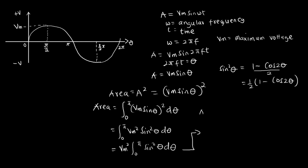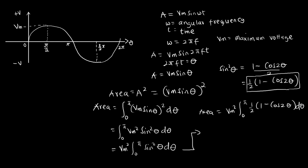Substituting the identity, I have the area equal to Vm² · ∫₀^π ½·(1 − cos2θ) dθ. The ½ is a constant so I can bring it to the left-hand side of the integral symbol. This gives: area = (Vm²/2) · ∫₀^π (1 − cos2θ) dθ.